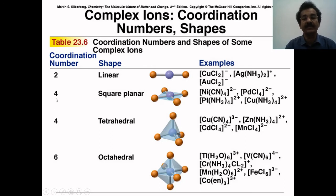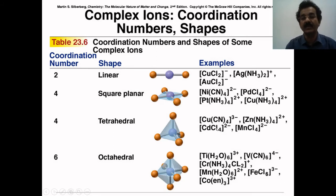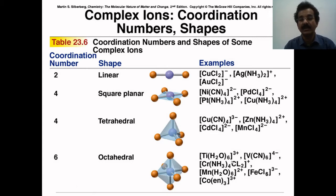If the coordination number is 4, examples such as tetracyanonickelate can exhibit square planar geometry. Similarly, if the coordination number is 4, complexes can also exhibit tetrahedral geometry — important examples are tetrachlorocadmiate and tetrachloromagnesate. If the coordination number is 6, it can exhibit octahedral geometry, with important examples being hexaaquatitanium and hexaaquamanganese.